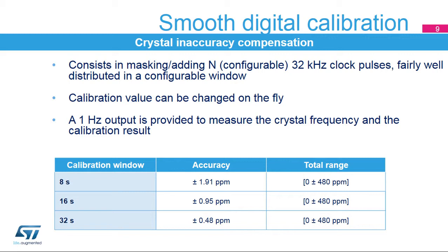The accuracy shown here is the resolution of the digital calibration. The calibration window size is configurable between 8, 16, and 32 seconds. For a 32-second calibration window, the accuracy is plus or minus 0.48 ppm.